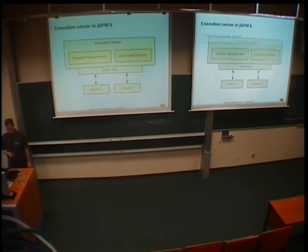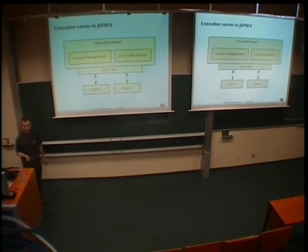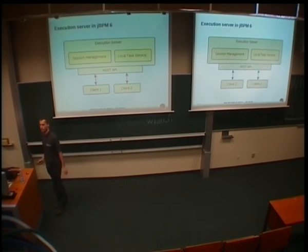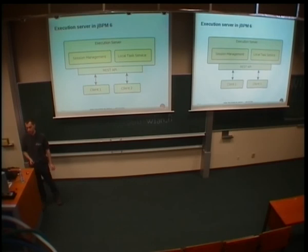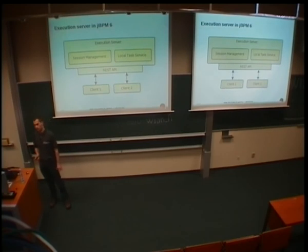This is how the execution server looks like. It's a simplified diagram. It will contain session management. The whole lifecycle of the business process instances can be handled there. It will provide functionality of the local task service. Its functionality will be exposed through the REST API. The clients can access this API concurrently.